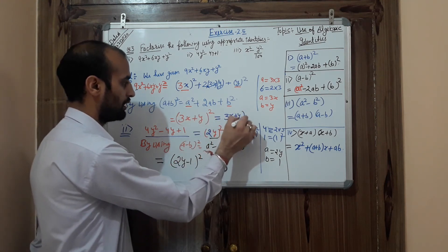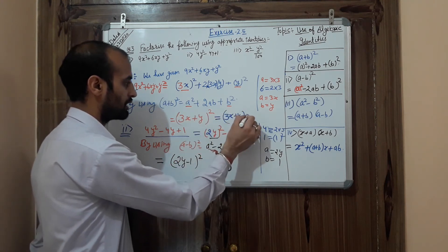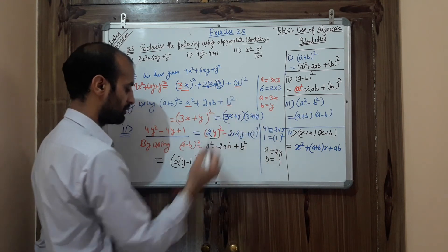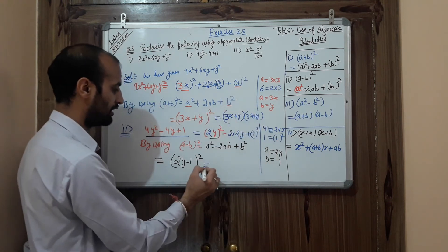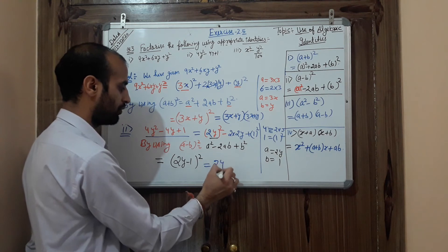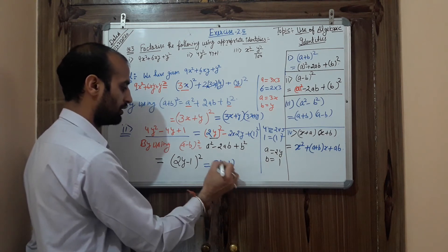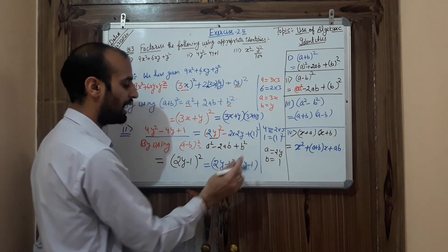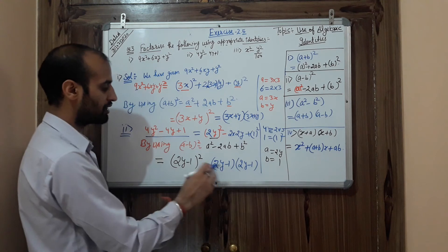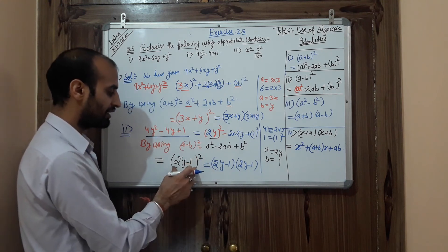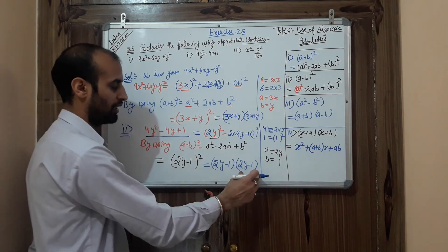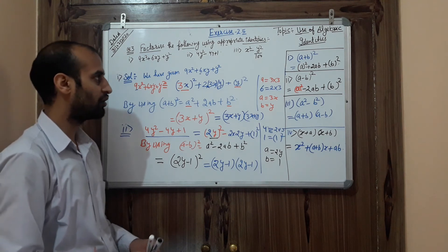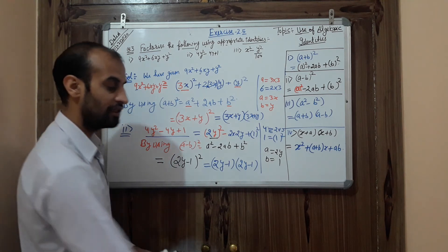You can also write it as two separate factors: (3x + y)(3x + y) for the first part, and similarly (2y − 1)(2y − 1) for the second part — written twice because the power is 2. This is the way to solve such questions.